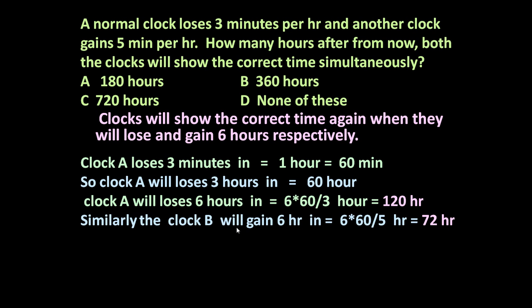Similarly, clock B will gain six hours in 6×60/5 hours = 72 hours. So clock B will gain six hours in 72 hours and clock A will lose six hours in 120 hours.